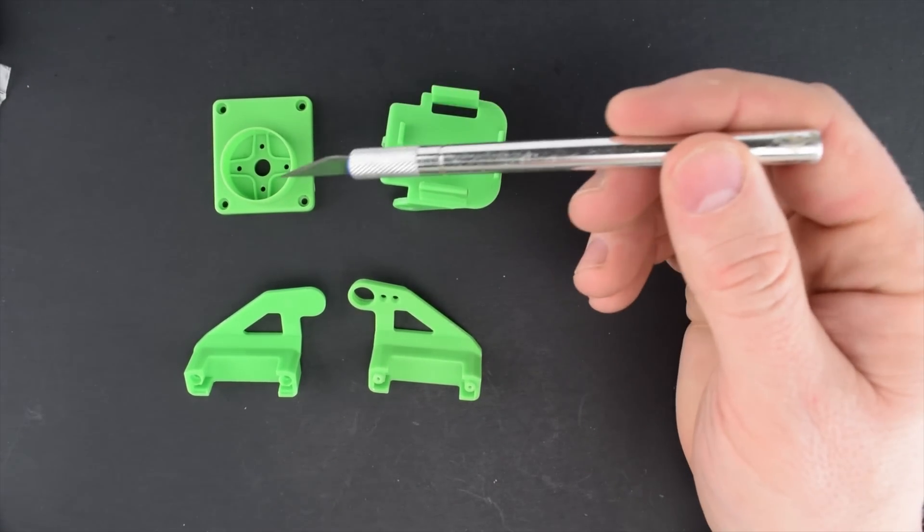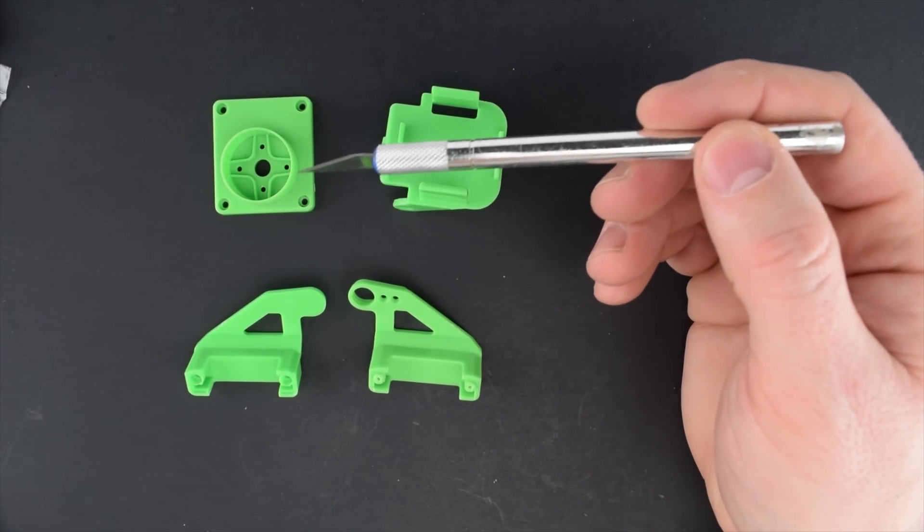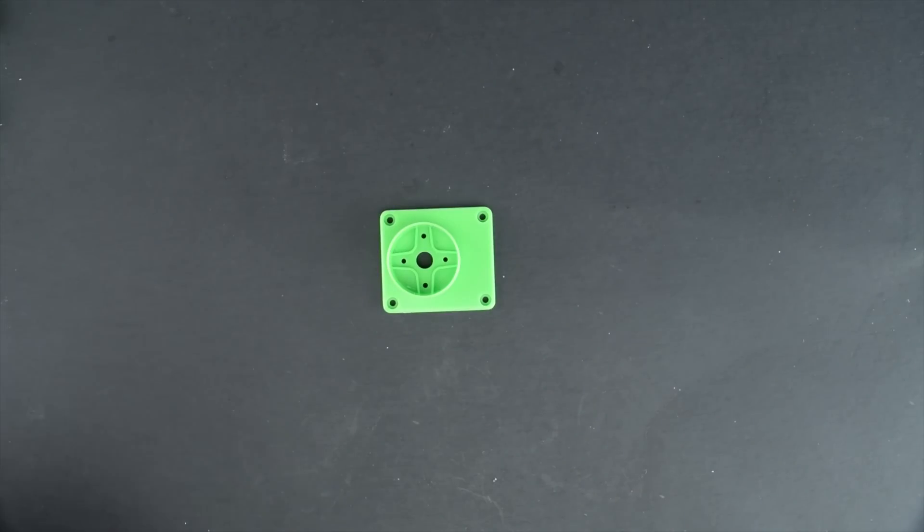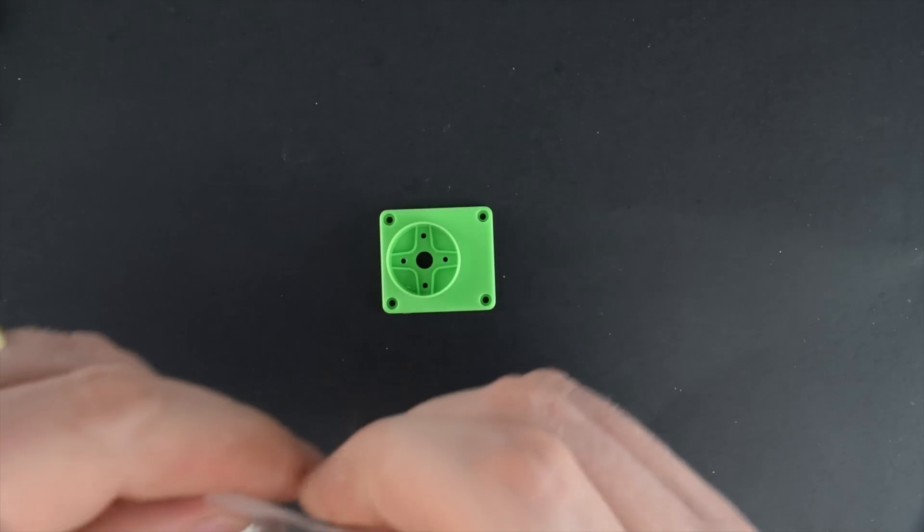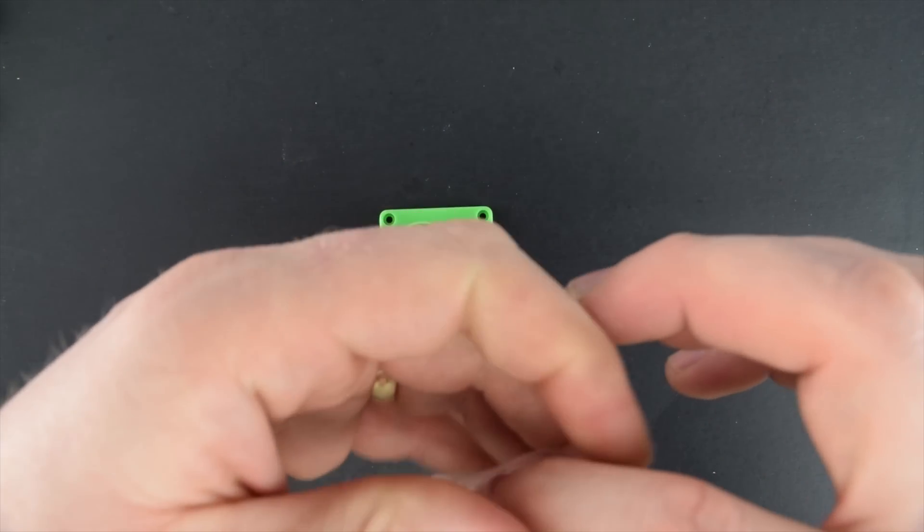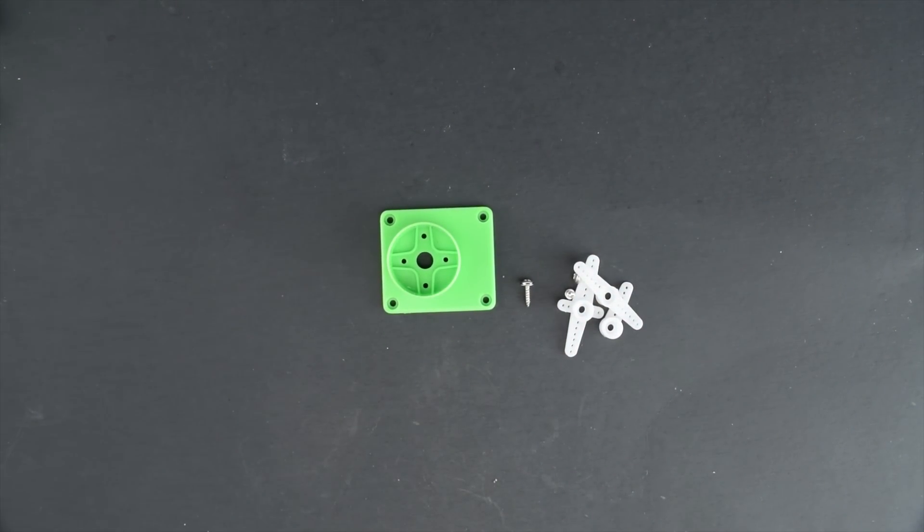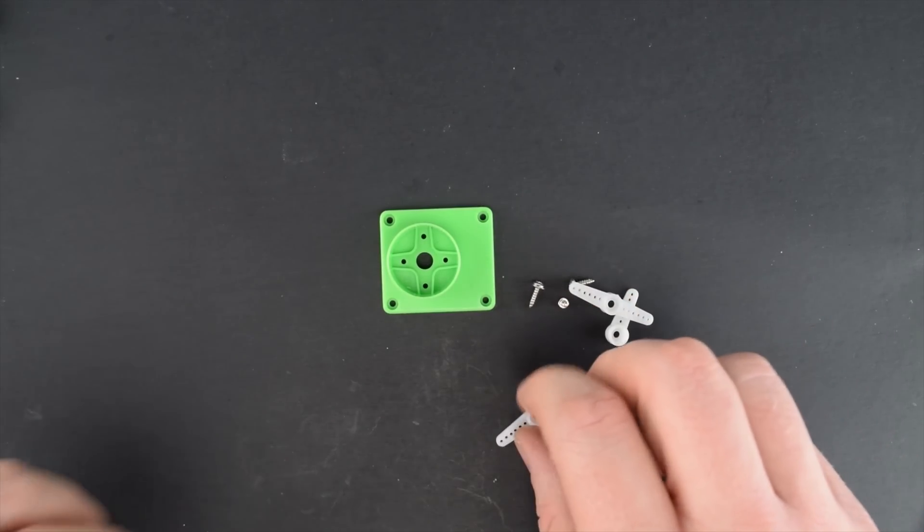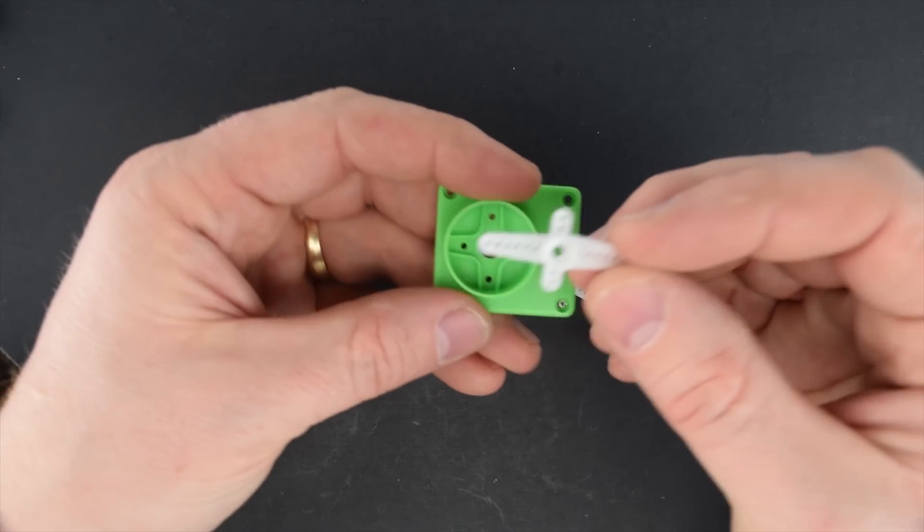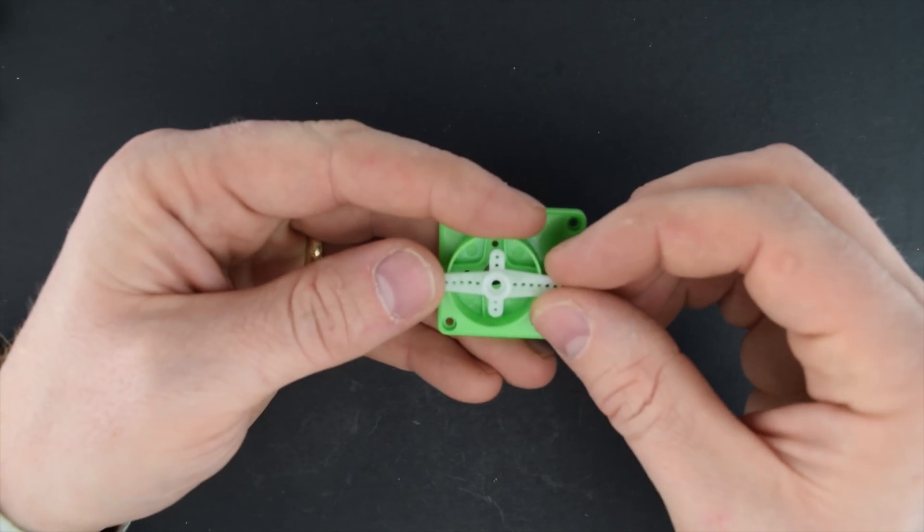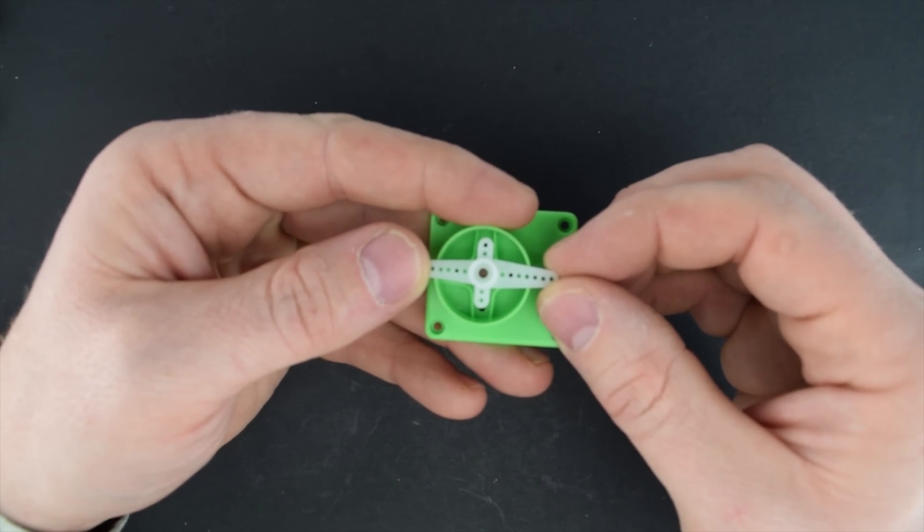The first piece we're going to be interested in is going to be this main base plate right here. So now that you have your base plate out, go ahead and dump out your gear mounting brackets. And the part that we're going to be interested in is going to be this four-spoke piece right here. And as you can see, it doesn't quite fit into the bracket. So what we're going to have to do is make some modifications.